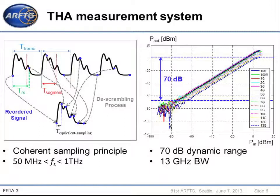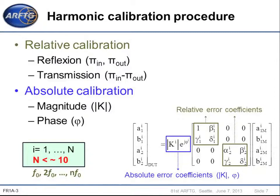With this principle the acquired samples are scrambled. To visualize the time domain signal, a re-ordering process is needed once the acquisition is terminated. We also show power characteristics of the time domain measurement system: we have a 70 dB dynamic range over a 30 GHz bandwidth. So to calibrate this system, a harmonic calibration procedure used in VNA can be used. This calibration consists in determining the error coefficients for carrier and harmonic frequencies.